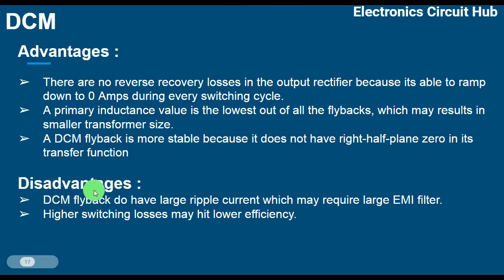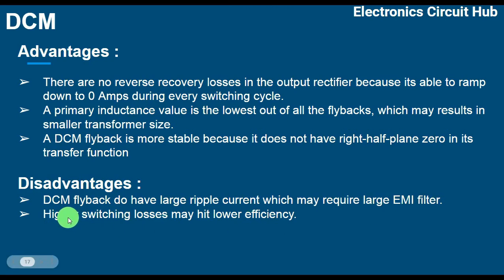The disadvantages of DCM: a DCM flyback has large ripple current, which may require a larger EMI filter. It also has higher switching losses, which may result in lower efficiency. Hope you have now understood what discontinuous conduction mode is, how flyback works in DCM, and its advantages and disadvantages. If you have any further questions, feel free to ask in the comment section. Thanks for your patience.